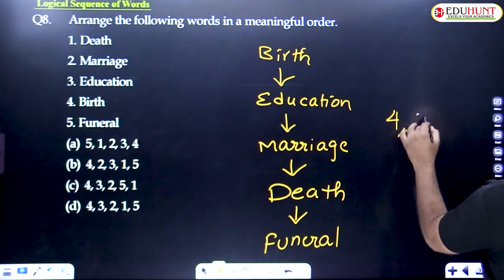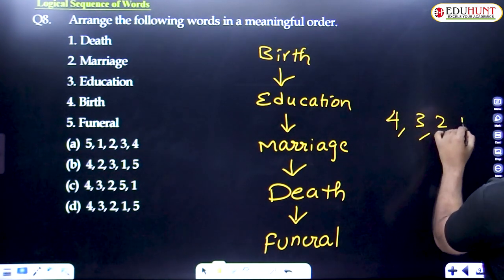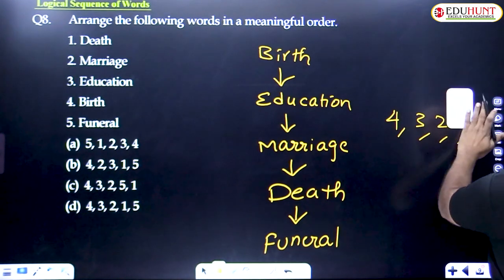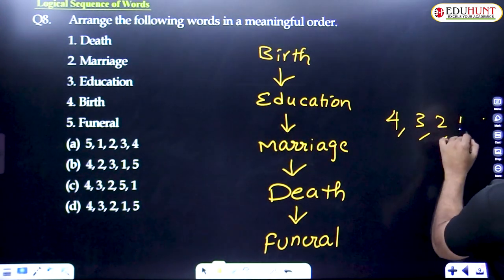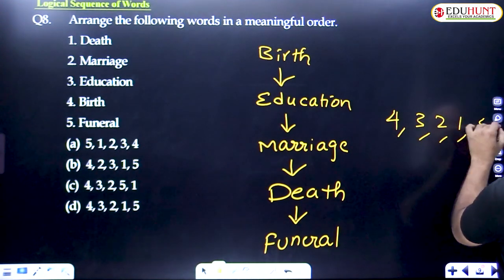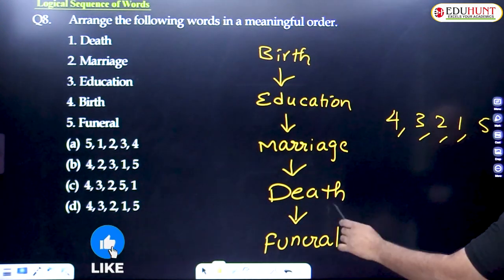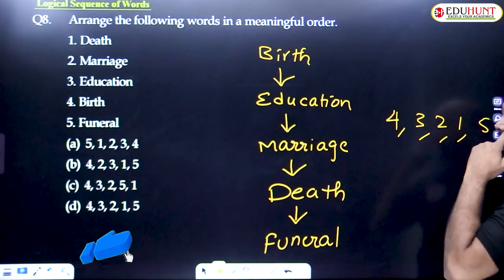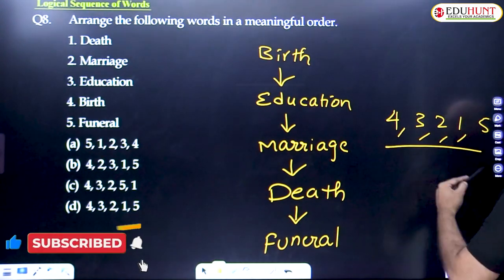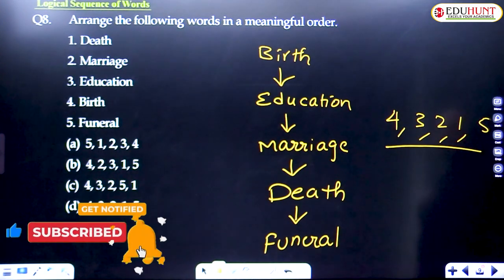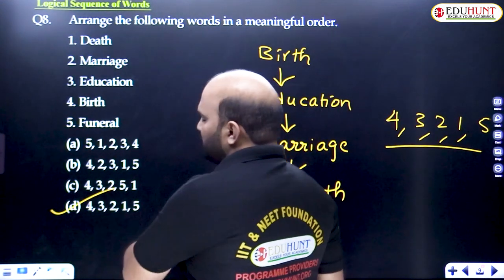Education is the third one, marriage is the second one, death is the fourth one, and funeral is the fifth one. So the sequence is birth first, marriage second, education third, death fourth, funeral fifth. Four, three, two, one, five — option D is the required answer.